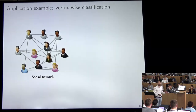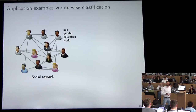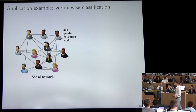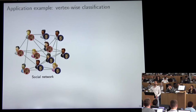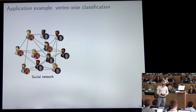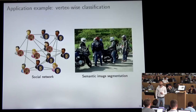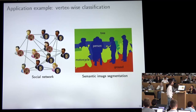You can also think of problems where you are given a social network with different users, having node-wise features representing gender, education background, workplace, age. You know a few labels for some vertices and try to predict the rest — for example, how users would vote in the next elections. By analogy to computer vision, this is like semantic segmentation: labeling each pixel according to what kind of object it belongs to.